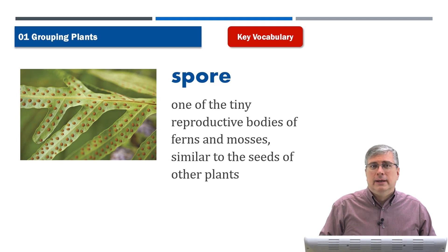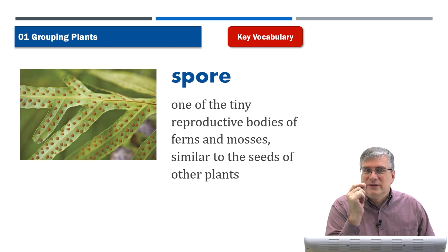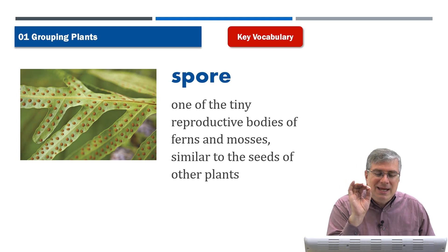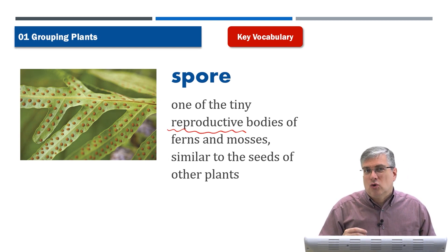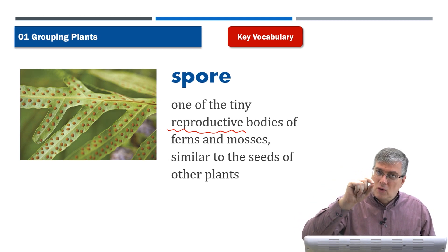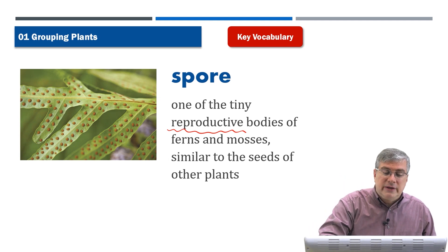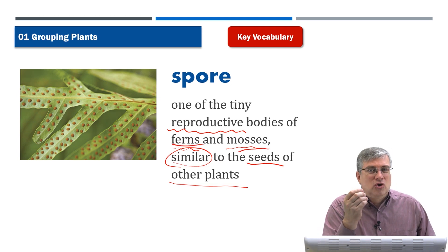Next is 'spore.' You know what seeds are — many plants produce seeds. But some plants don't create seeds; they create spores. A spore is a tiny reproductive body. 'Reproductive' means a new organism can grow from it. Just like a new apple tree can grow from an apple seed, a new fern can grow from a fern spore. Spores are the reproductive bodies of ferns and mosses, similar to the seeds of other plants. Ferns and mosses don't create seeds — they create spores.